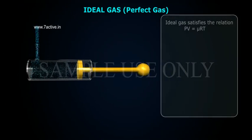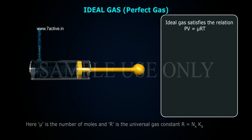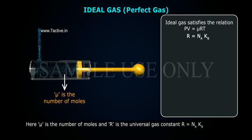Ideal gas satisfies the relation PV = μRT, where μ is the number of moles and R is the universal gas constant. R is equal to Na·KB.